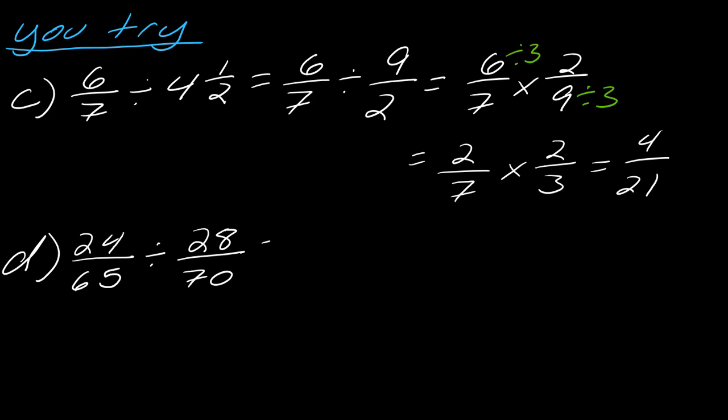Okay, so, D. This one's going to be 24 over 65 times 70 over 28. Alright, so, between the 65 and the 70, I can divide both of those by 5. So, I'll go ahead and write that out like this.